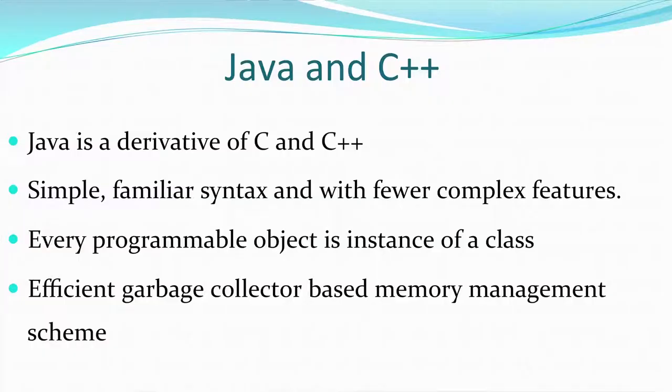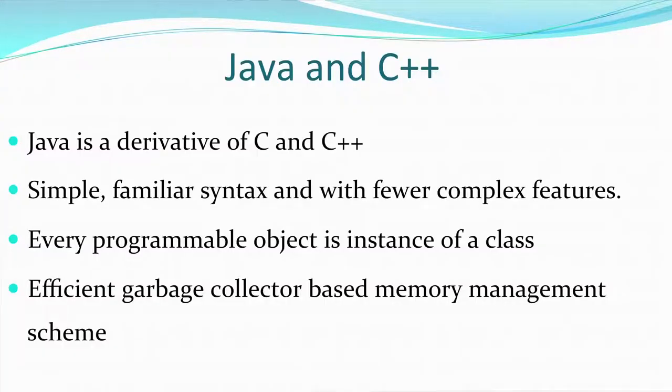Next we move on to Java and C++. Both of these are languages used to write programs for a computer — a program is a set of instructions given to the computer to perform a particular task. The internet is largely programmed using Java. C++ is the first object-oriented programming language that was being used, and Java is an advanced form of object-oriented programming language. Java is the derivative of C and C++, and it has a simple, familiar syntax.